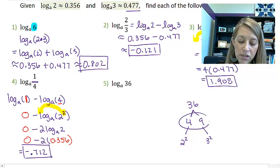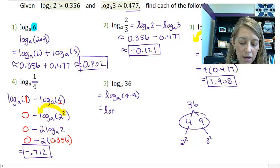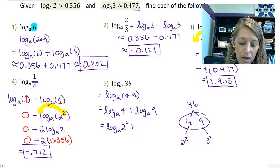And so if I first take this as log base A of 4 times 9, I can write that as log base A of 4 plus log base A of 9. Now I can put in those substitution log base A of 2 squared plus log base A of 3 squared.